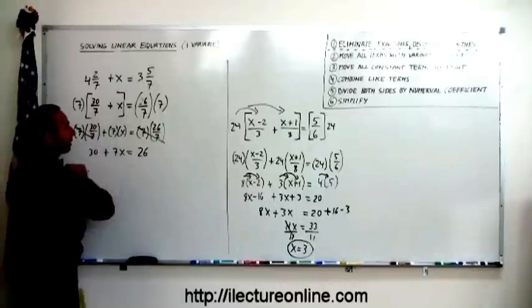And now we have a simple linear equation that we can solve using our typical methods. The term with the variable is already on the left side, so you leave it there. Then you move the constant term to the other side. We have 7x equals 26 minus 30. Then combine like terms, so 7x equals minus 4. Then divide both sides of the equation by the numerical coefficient. Divide by 7, divide by 7, that cancels out, x equals minus 4/7.